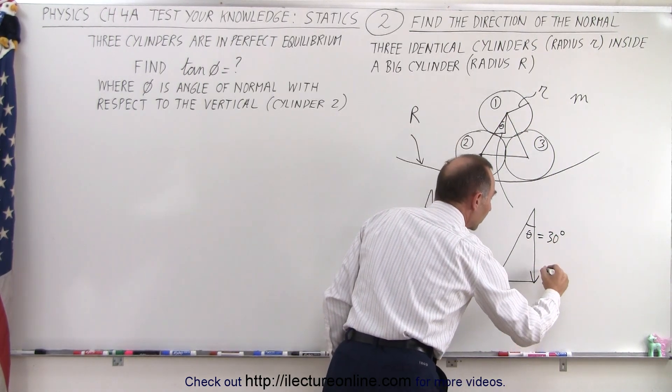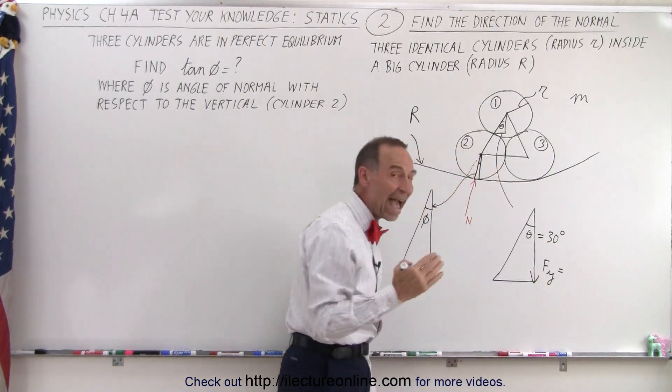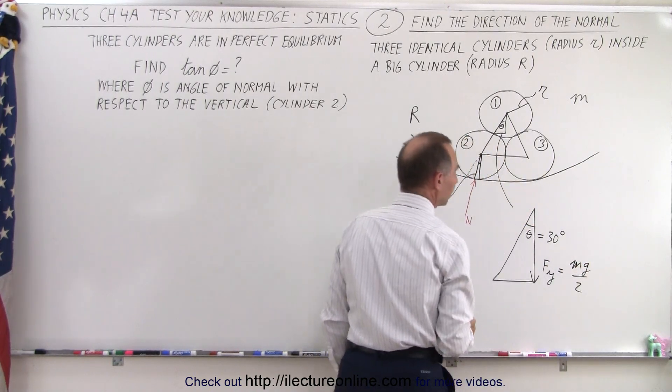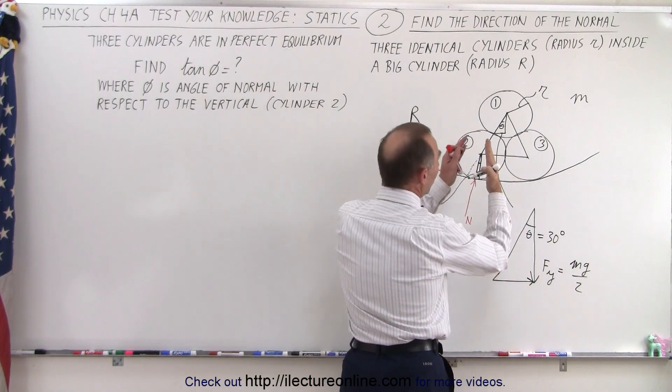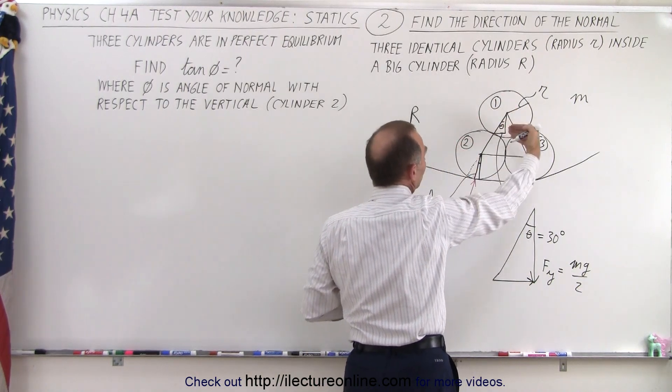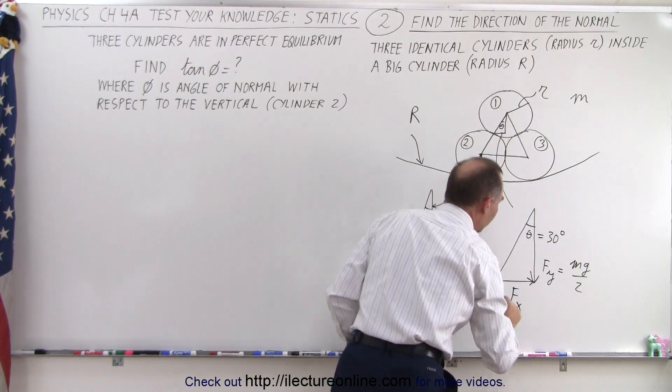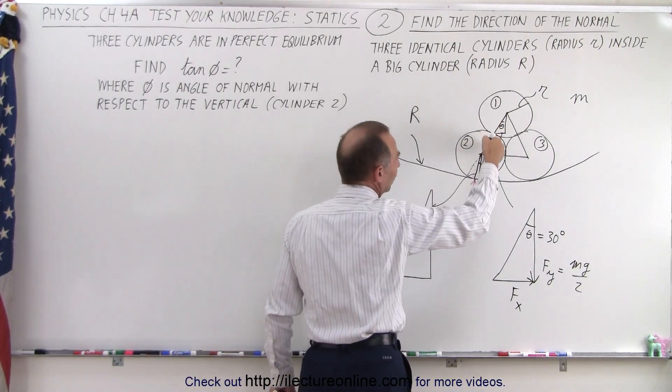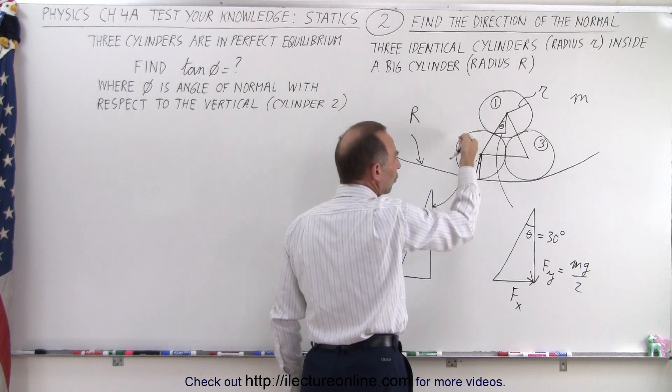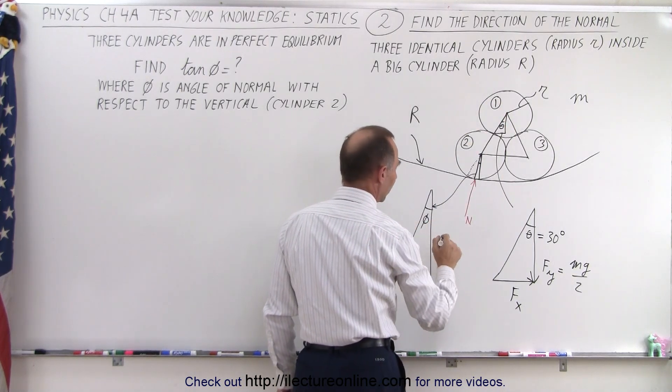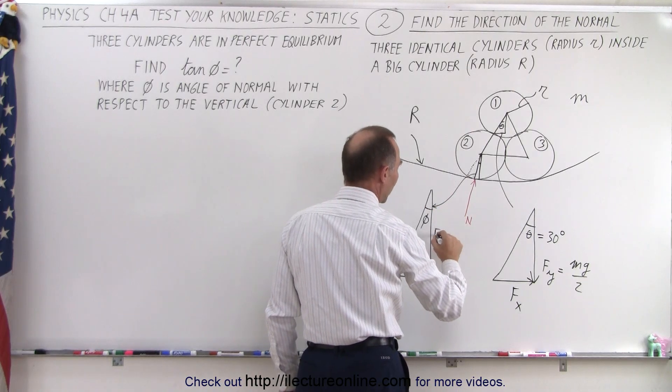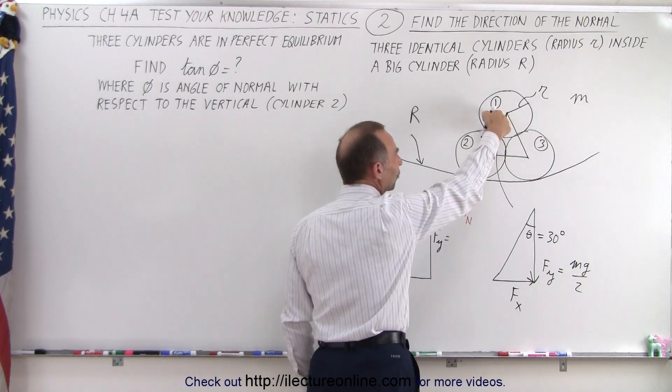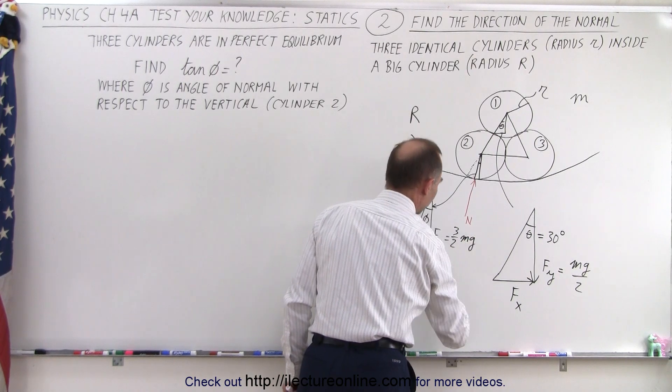The vertical leg right here, call that F sub Y, supports half the weight of that top cylinder. So that would be Mg divided by 2. This leg here supports the separation. Since it's pushing at an angle here, there's a force pushing this way, and so we'll call that F sub X. That force is transferred onto this cylinder, both in the vertical and the horizontal direction. So now when we look over here, this here is the F in the Y direction, and that is going to have to support the weight of the bottom cylinder, plus half the weight of the top cylinder. So that's 3 over 2 Mg for this one.